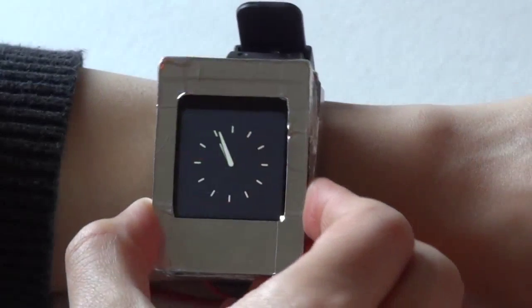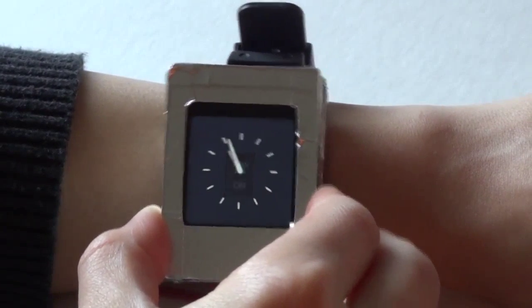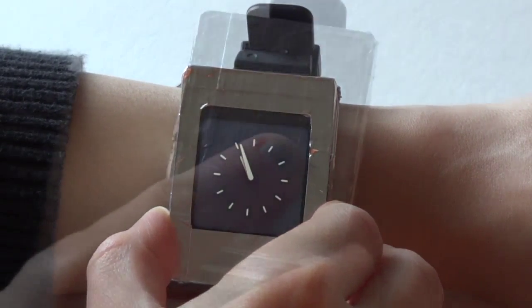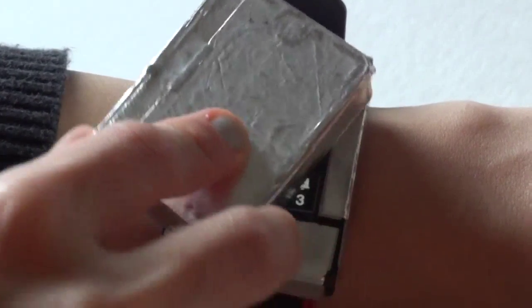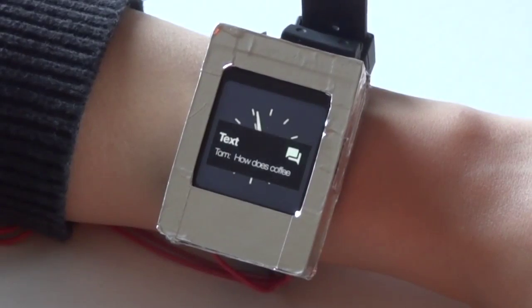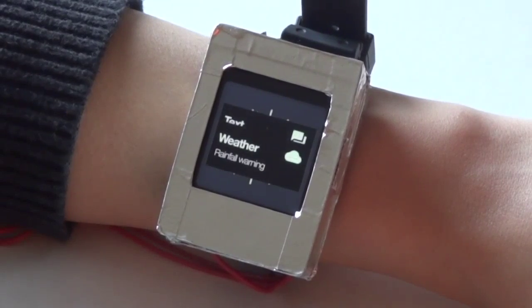We apply this design space to common smartwatch interactions, like handling notifications. A small twist of the top toggles notification priority. A closed top silences notifications, while a closed peak views notifications missed. When notifications arrive, sliding the top down provides a preview of notification.